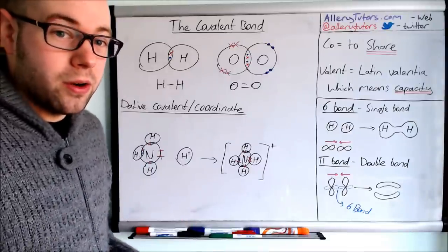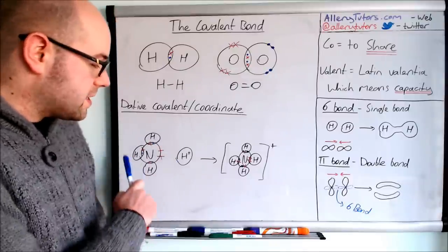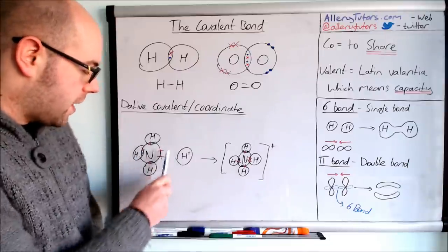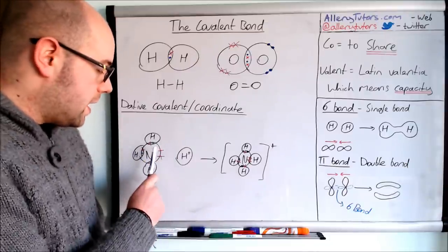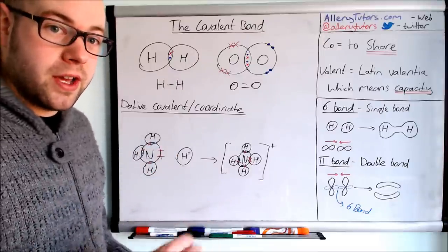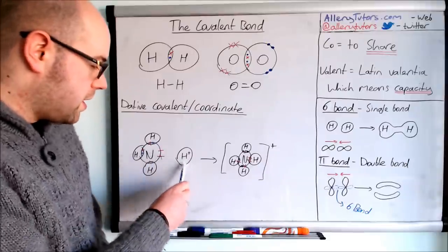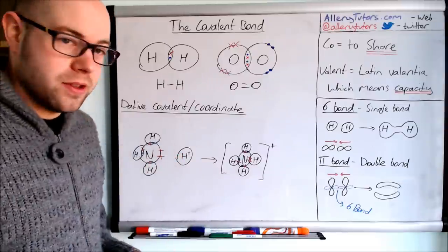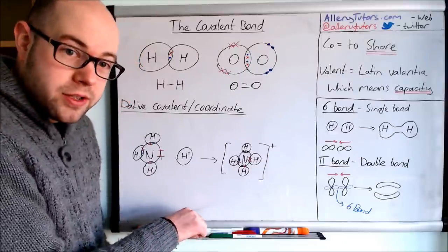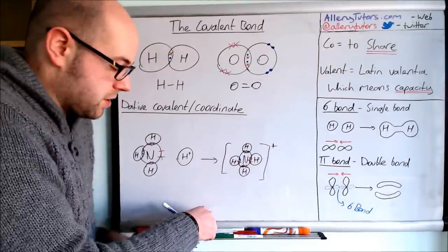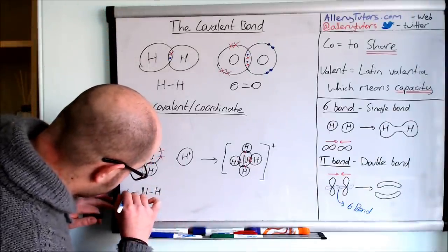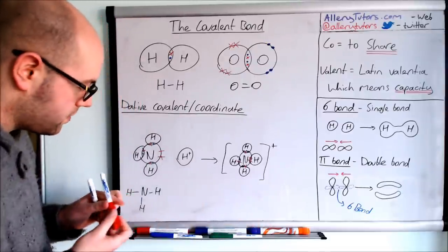The final topic is dative covalent or coordinate bonding. This is a slightly different type of bonding — weaker than a traditional covalent bond. Here we have ammonia: nitrogen has five electrons and is surrounded by three hydrogens. A dative covalent bond is where both electrons in a pair are donated from one atom to another atom or ion. We're going to react ammonia with an H⁺ ion to form an ammonium ion.